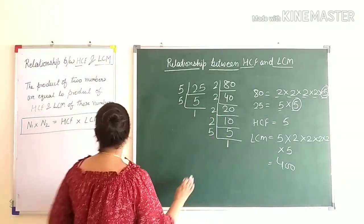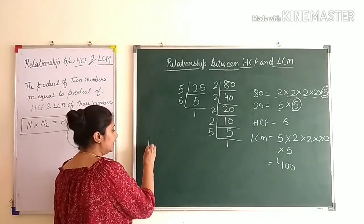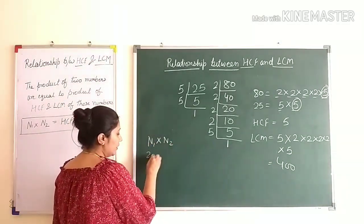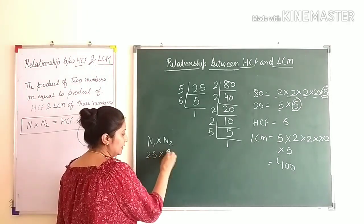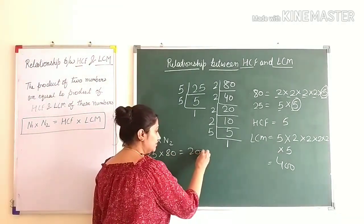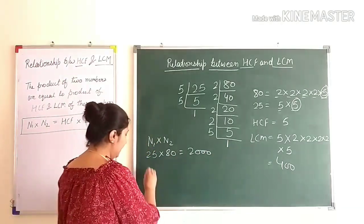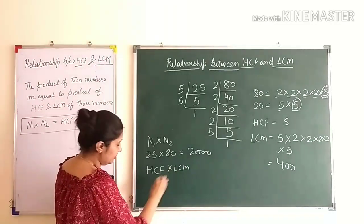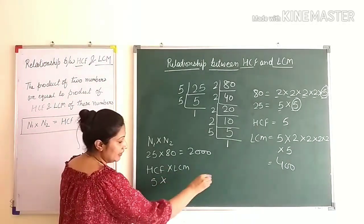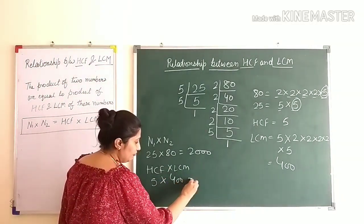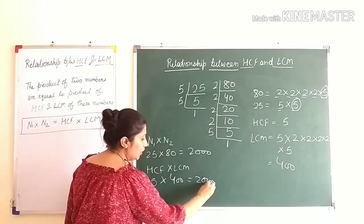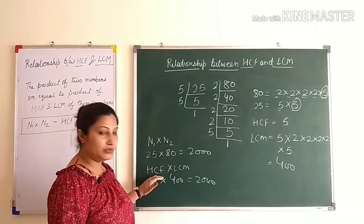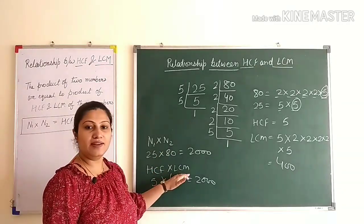Now let's see how the formula is proved. First, multiply the two numbers: N1 × N2 = 25 × 80 = 2000. Now let's multiply HCF and LCM: 5 × 400 = 2000. Hence we proved that the product of two numbers is equal to the product of HCF and LCM.